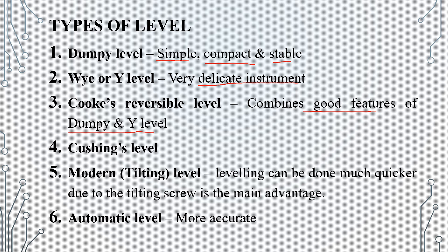The fourth one is Cushing's level. The fifth one is the modern tilting level — if you use this, you can use these leveling measurements to great advantage. The sixth one is the Automatic level, which is the most accurate instrument for leveling measurements.